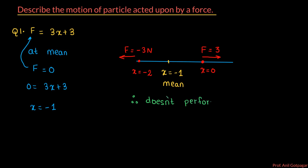Let me repeat the method: first step — we find where is the mean position or equilibrium position. Jo bhi formula given hai, equation mein substitute F equals 0, toh hame milta hai mean position. Then take a point on right hand side and left hand side, find magnitude and direction of force at those points. If force is acting towards mean position, then it is SHM.